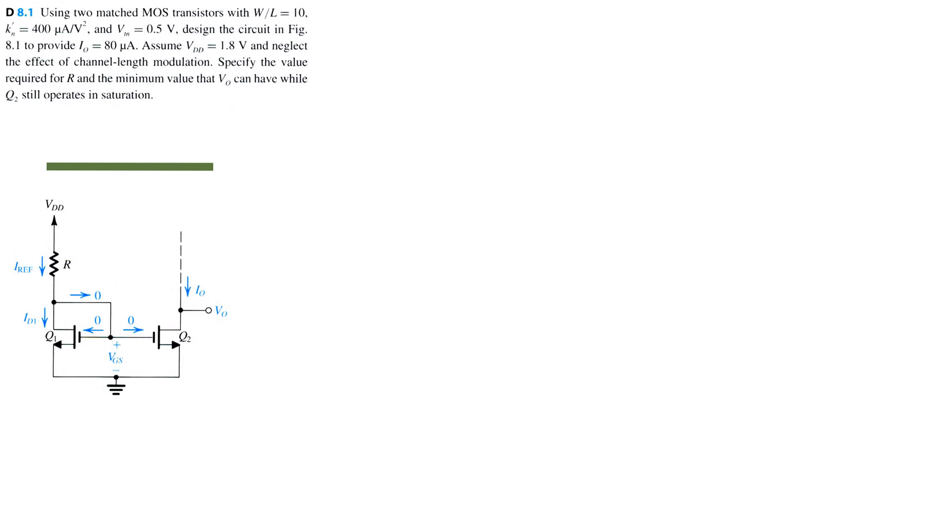Let's solve problem 8.1 for Microelectronics Circuits 8th Edition by Cedron Smith. Using two matched MOS transistors with W divided by L equal to 10, KN' equal to 400 microamp per volt squared, and VTN voltage equal to 0.5 volts, we want to design the circuit in the figure below to provide an output current IO equal to 80 microamps.